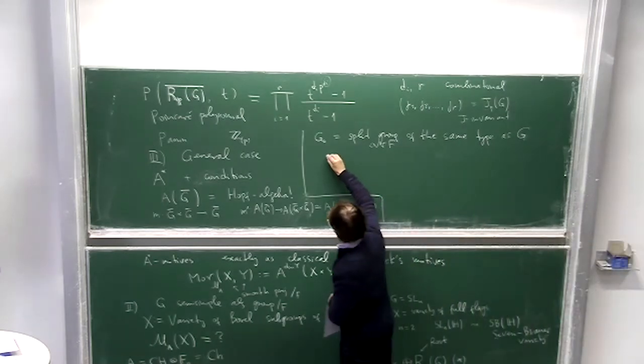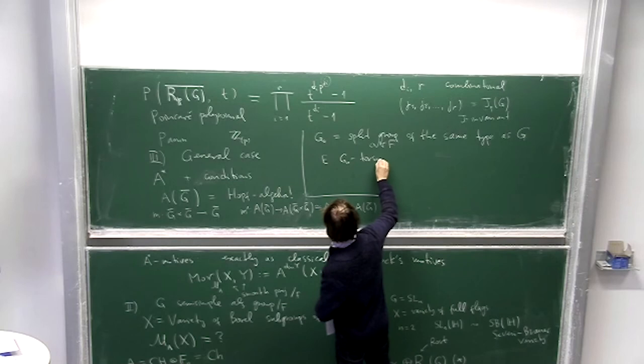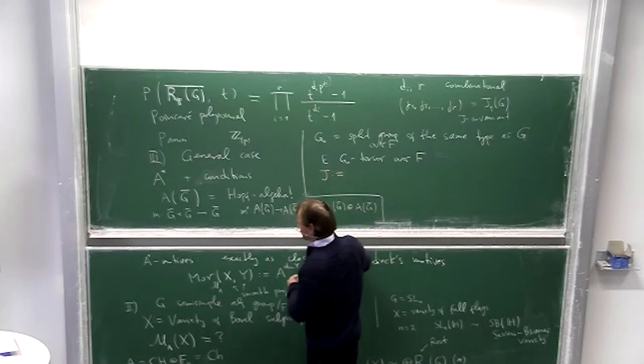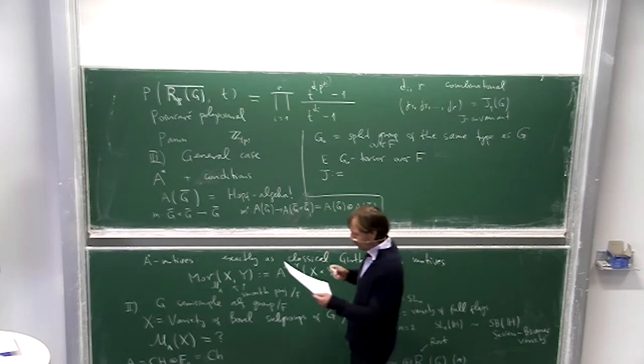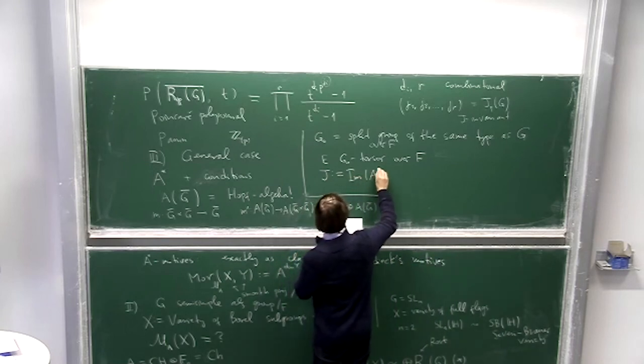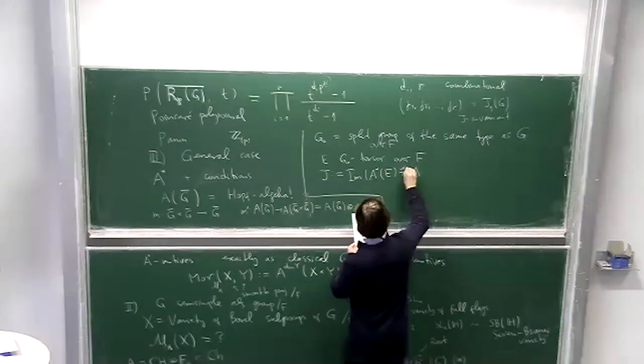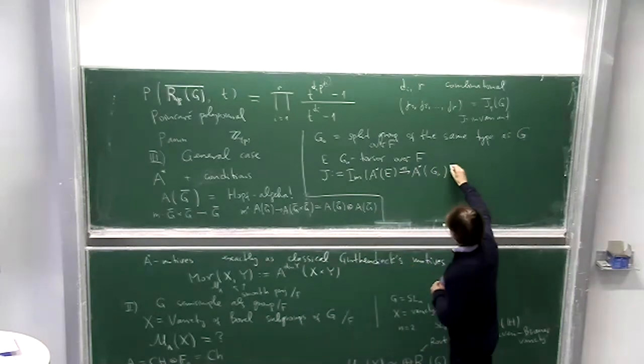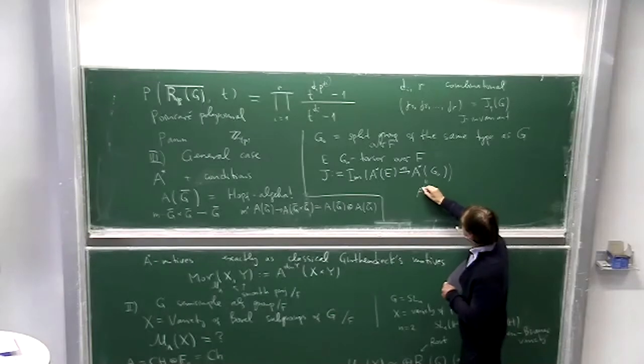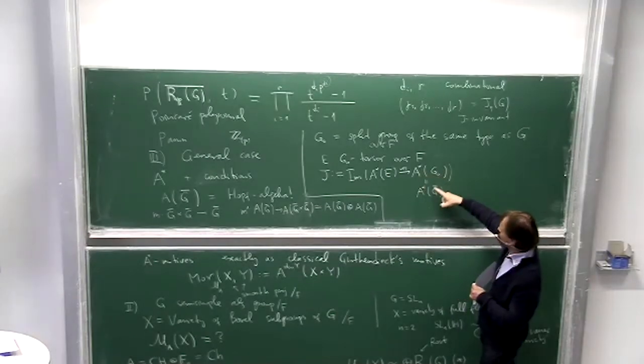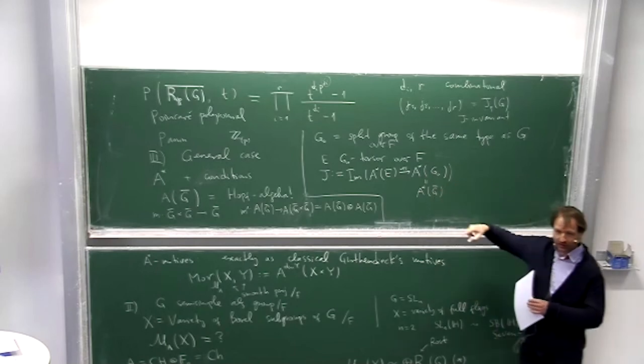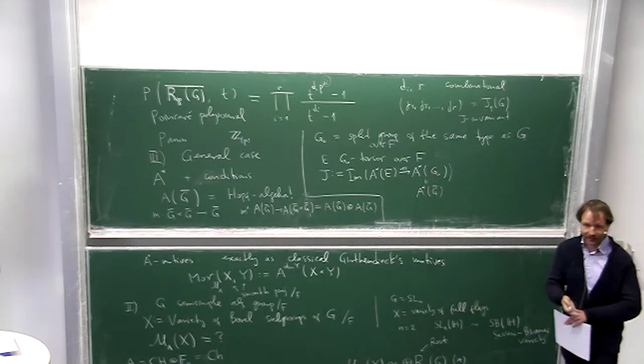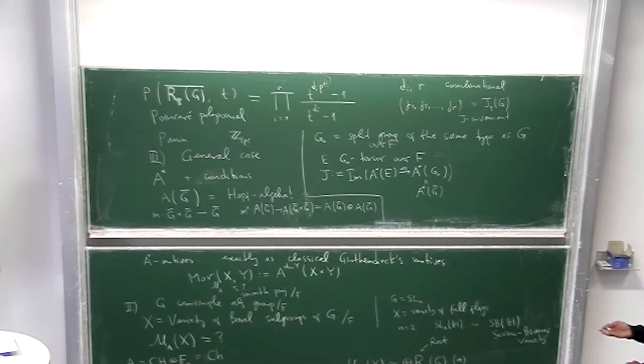So this X corresponds to some G_0 cocycle over F. And so we define J, J is supposed to generalize the following. Also, so another point: you can identify A of G_0 and A of G over F bar, because when the group is split, this cohomology does not depend on the base field when the group is split.